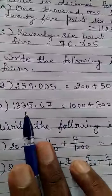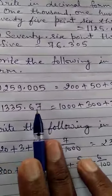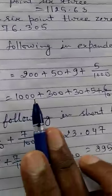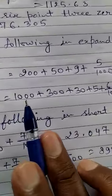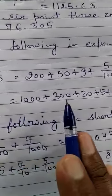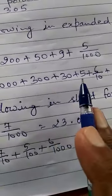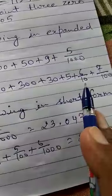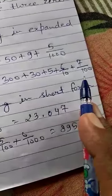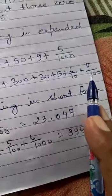Take one more example: 1335.67. You will write this in expanded form like this: 1000 plus 300 plus 30 plus 5 plus 6/10 plus 7/100.